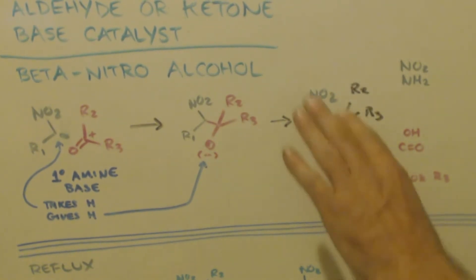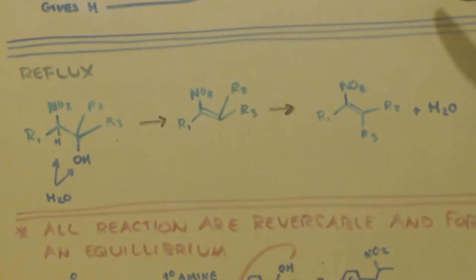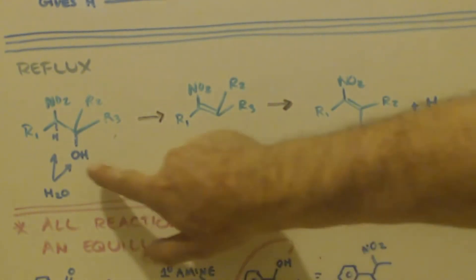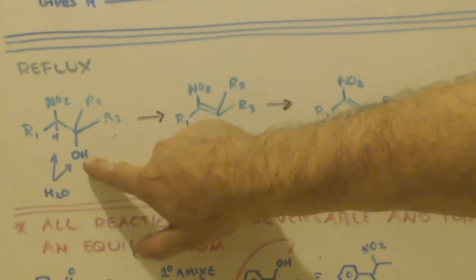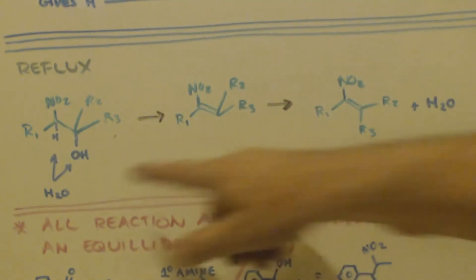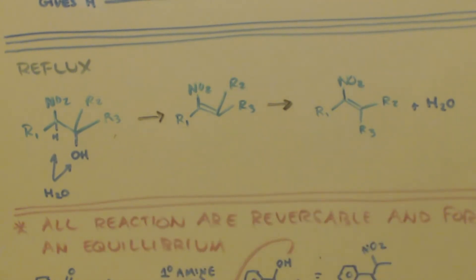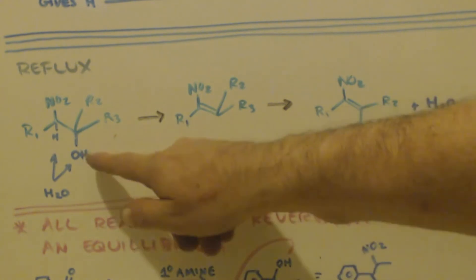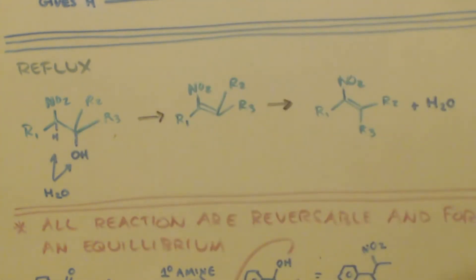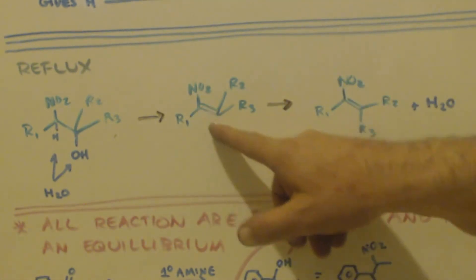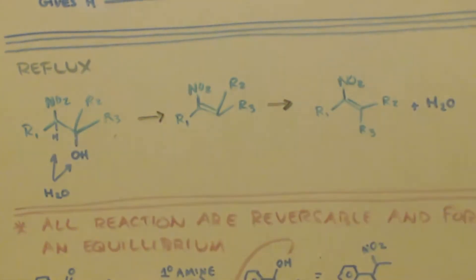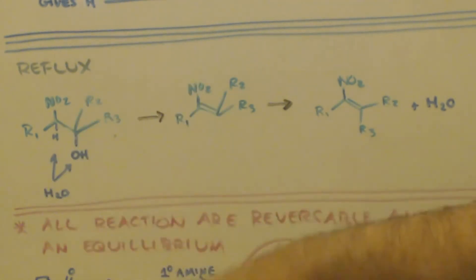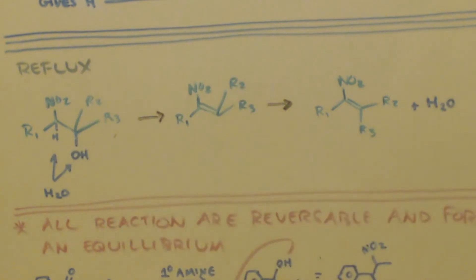The double bond forms — at least a little bit — whether you heat it or not, but to really drive it you reflux with heat. Looking at what we just had: if I take the OH and the H and pull them off, that makes H₂O. Since one is negative and one is positive, you're pulling off a neutral thing so what remains is neutral. The electrons from the O-H bond fall into this to make the double bond.